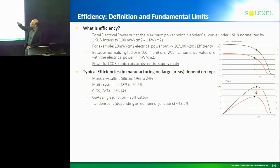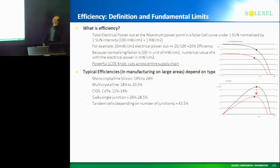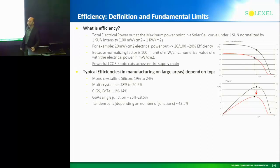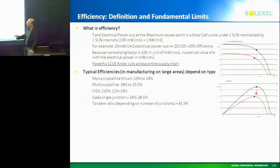When I say this, essentially in manufacturing on large areas, these are typical values that you see for different material sets. For monocrystalline silicon, it's 19 to 24% — that's the mainstream. For multi-crystalline, it's 18 to 20.5%. What are called thin film — CIGS or cadmium telluride — it's 11 to 14% range.